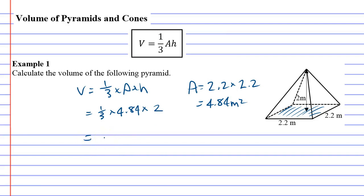One third times 4.84 times 2 equals, and they haven't told us how many decimal places so we'll just use our own, 3.23 meters cubed correct to 3 decimal places.